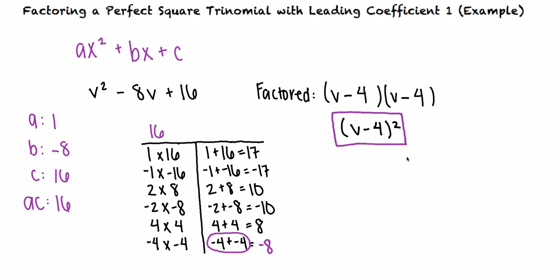That's the special part about perfect square trinomials. We are always able to write them in factored form as some quantity squared. Let's run through another example.